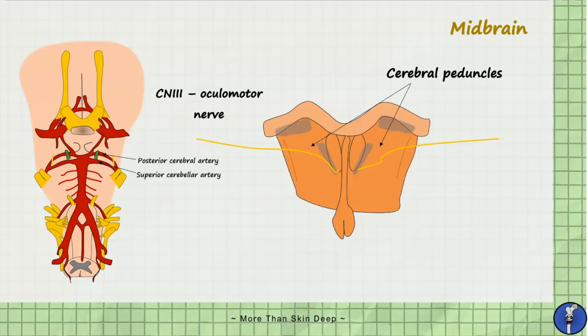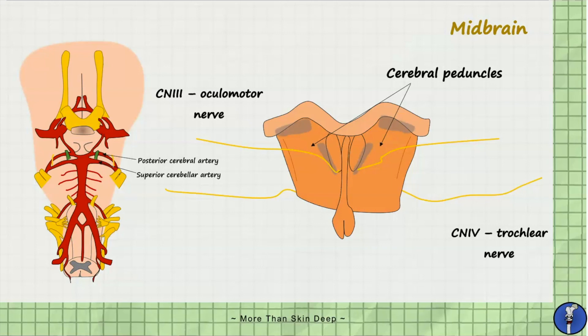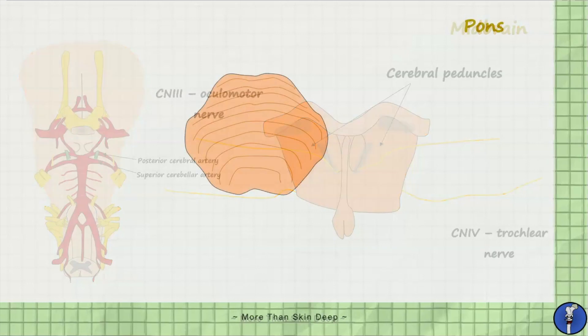The fourth cranial nerve — the trochlear nerve — comes off the posterior aspect of the midbrain and has the longest intracranial length within the cranial cavity. The trochlear nerve then emerges across to the anterior surface of the midbrain.